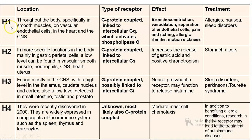There are four types of histamine receptors: H1, H2, H3, and H4. The most common types are H1 and H2. H1 receptors are located throughout the body, specifically in smooth muscles, on vascular endothelial cells, in the heart, and in the CNS. H1 receptors are G protein-coupled receptors linked to intracellular GQ protein, which activates phospholipase C.